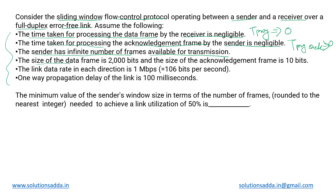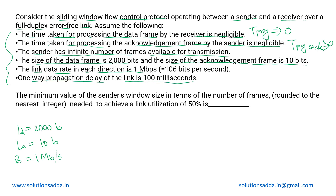The exact data given: the size of the data frame, which we call L_d, is 2000 bits. The size of the acknowledgement frame, L_a, is 10 bits. So we are dealing with both the data frame and the acknowledgement frame. The link data rate, which is the bandwidth in each direction, is 1 Mbps. All values are in bits, not bytes.